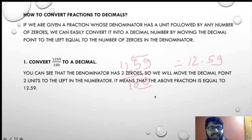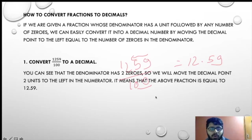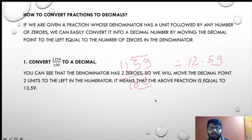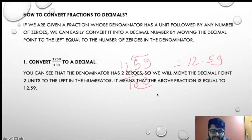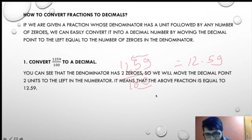You can see that the denominator has two zeros. So we move the decimal point two units to the left in the numerator. If the denominator has two zeros, we go to the numerator accordingly. This means the above fraction is equal to 12.59. This is a simple shortcut method.